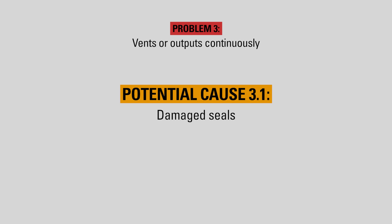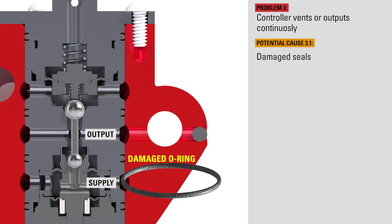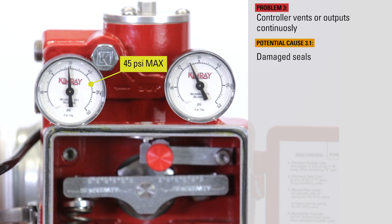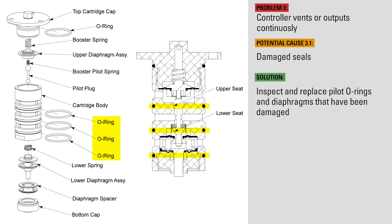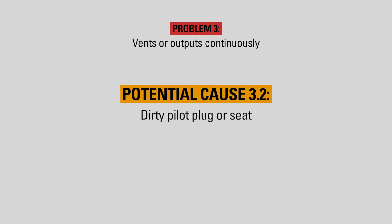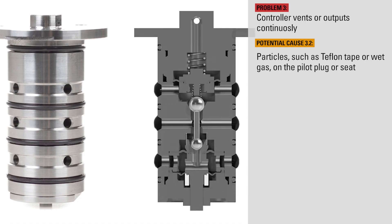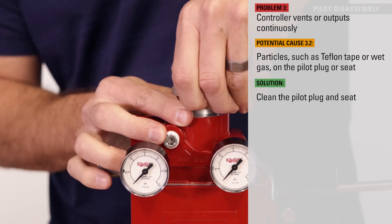If your Gen 3 is sending output or venting continuously, here are the possible causes and solutions. If any o-rings or diaphragms have been damaged, gas could travel to the vent or output when it shouldn't. If the supply pressure has been set to greater than 45 psi, this could rupture the diaphragms in the pilot. Inspect pilot o-rings and diaphragms and replace if necessary. If particles, Teflon tape, wet gas, or any other obstructions have made their way into the pilot, the pilot plug can stick in one position or not fully seat, allowing gas to flow by. Clean the pilot plug and seat and ensure the filter is clean. Instrument gas may need upstream filtration or moisture removal.